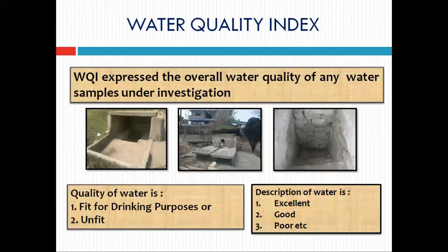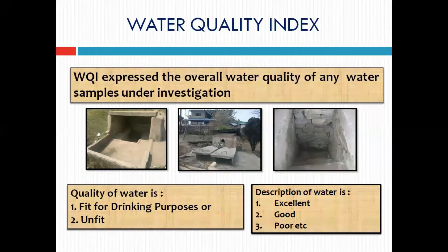Water Quality Index expresses the overall water quality of any water sample under investigation. On using Water Quality Index, the analytical data of water samples studied can be used to determine whether the water is fit for drinking purposes or not. It can also express the water characteristics as good, excellent, poor, or very poor in terms of its quality.